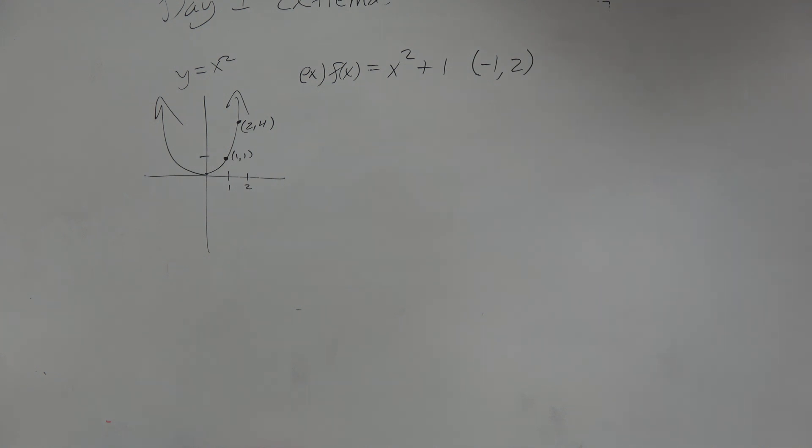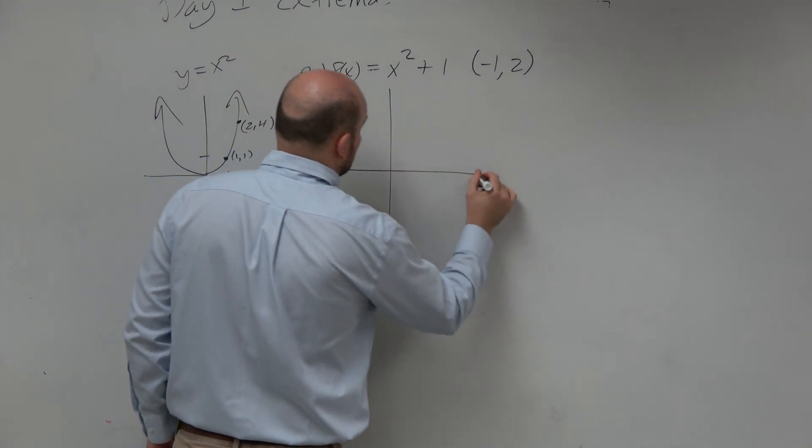Open interval just means that's not going to be excluded. So if we have our parent graph, and we just go ahead and sketch this again, just real quick.